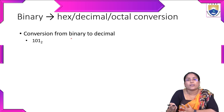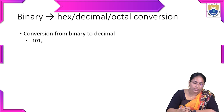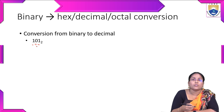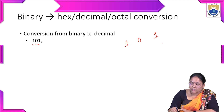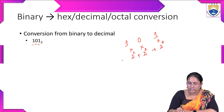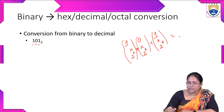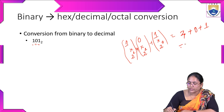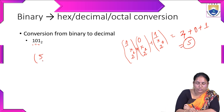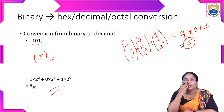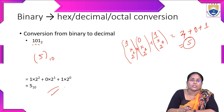For binary-to-decimal conversion, the easiest process is using weighted powers of 2. For example, 101 in binary: multiply each bit by its positional power — 1 × 2^2 + 0 × 2^1 + 1 × 2^0 = 4 + 0 + 1 = 5 to base 10. This is the simplest method to convert any binary number to its decimal equivalent.